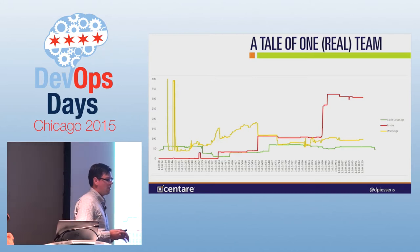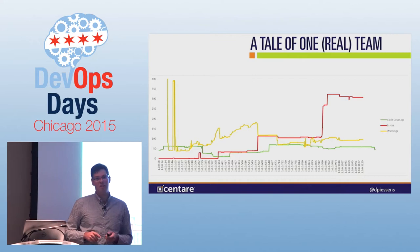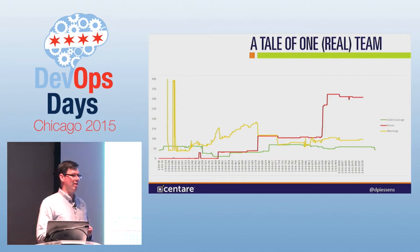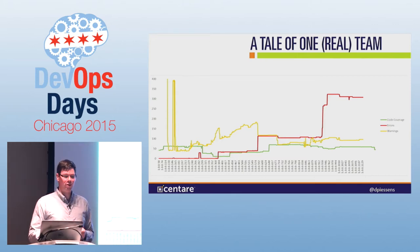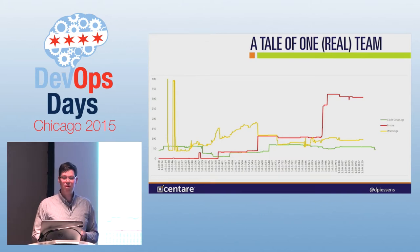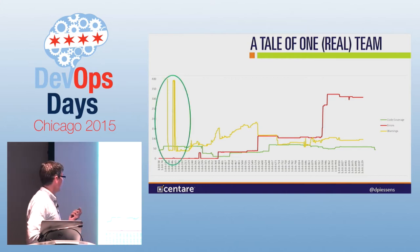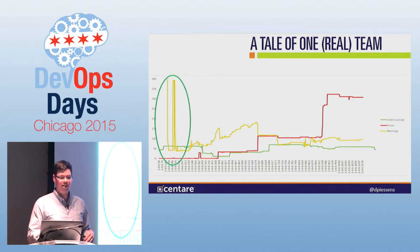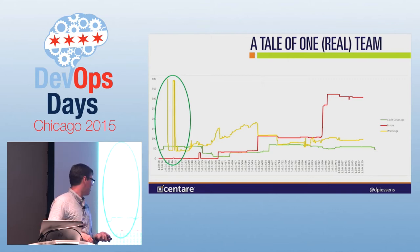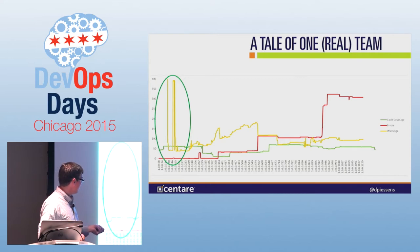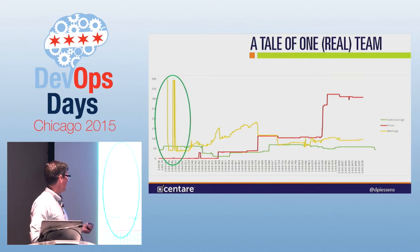I want to pause and talk about what happens to an actual team when you start introducing things like this. I pulled data from a team I've been coaching for the last six months — just their CI metrics from their servers, nothing advanced, nothing fancy. Almost every CI server can generate this data. The green line is code coverage, the red line is the number of code inspection errors, and the yellow is the number of code warnings.